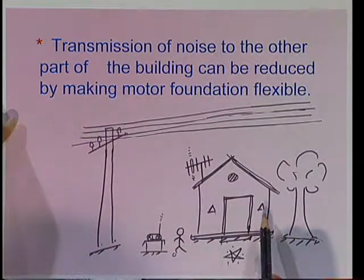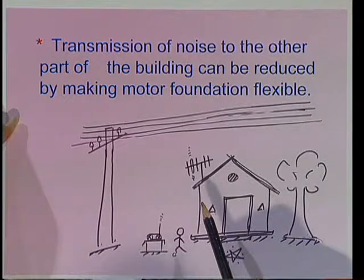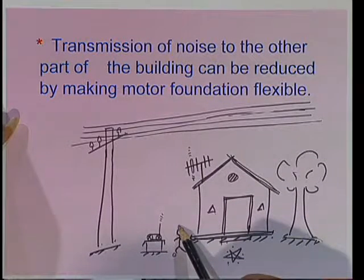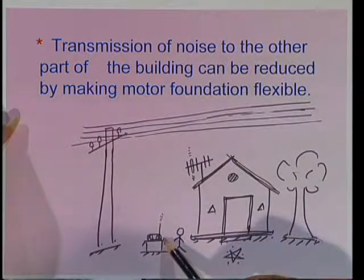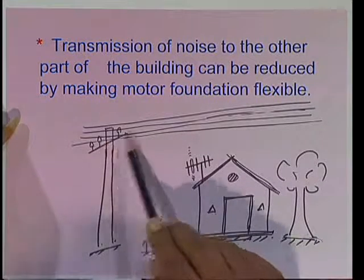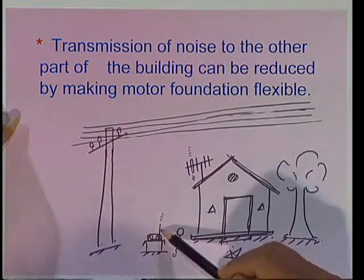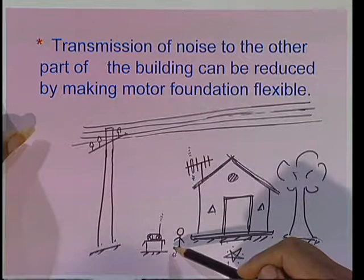There is another type of noise. In domestic applications, if you are using a mixer or other commutator motors while running the TV or radio, there may be some noise in the TV or radio. This is because the supply lines cross over the aerials of the TV or radio, inducing some EMF in the aerials, which gives noise. Generally, this type of noise can be reduced by connecting a capacitor across the motor.